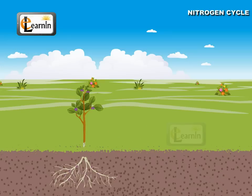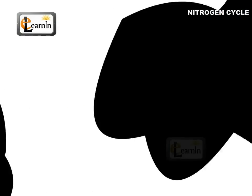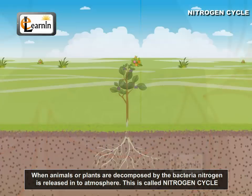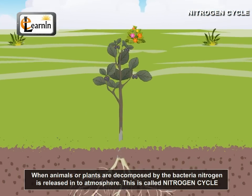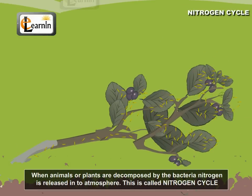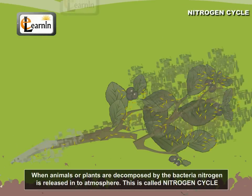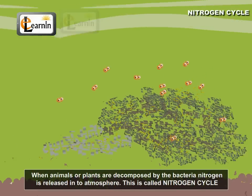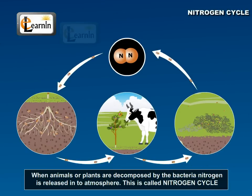When animals eat these plants, these substances enter into the animal body. When these animals or plants are decomposed by the bacteria, nitrogen is released into the atmosphere. This is called the Nitrogen Cycle.